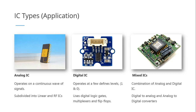If an IC operates on discrete defined levels — the most basic being the binary signal, 1 and 0 — then we have a digital IC. The basic digital logic gates are one of the fundamental examples of a digital IC, as are multiplexers and flip-flops. You'll learn more about digital ICs once you get into your course about digital logic gates or logic circuits and analysis.